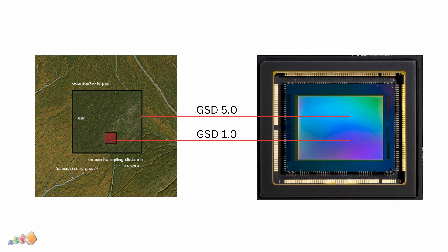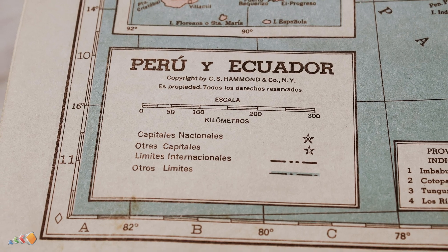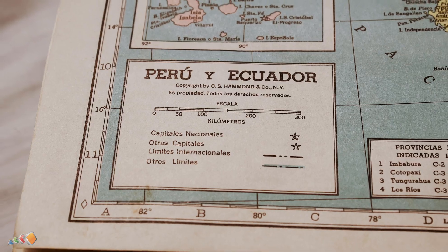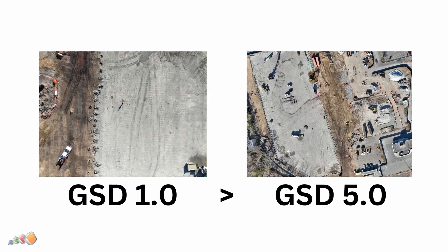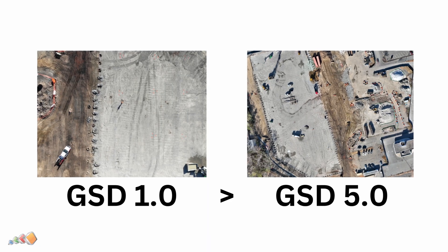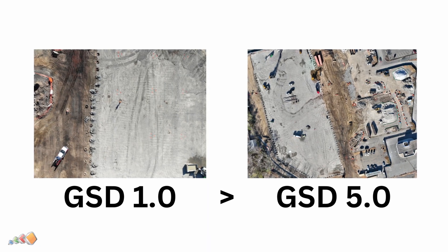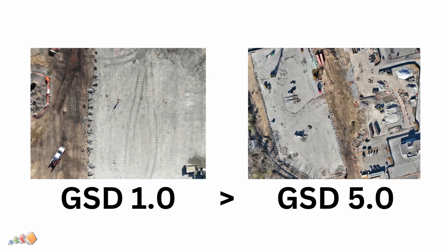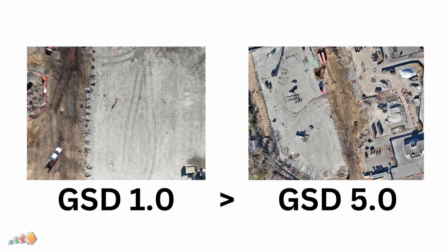One way to think of this is like a score in golf — a lower score is better. So a GSD of one has more detail than a GSD of five. There are three components that define the GSD.